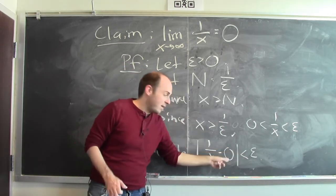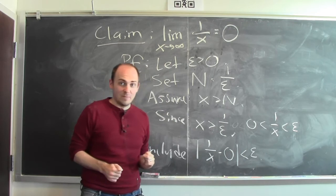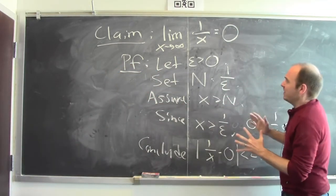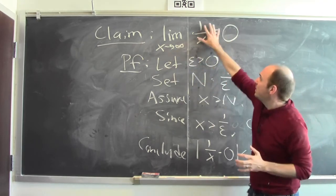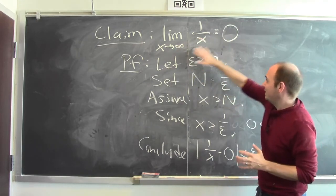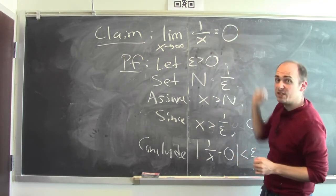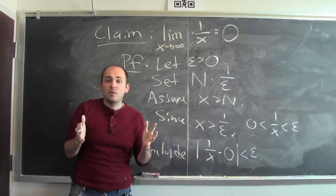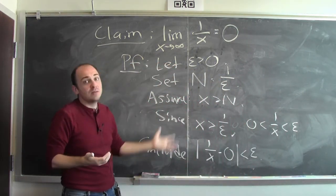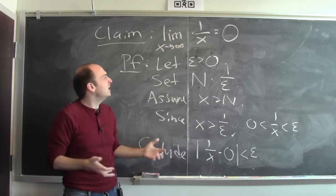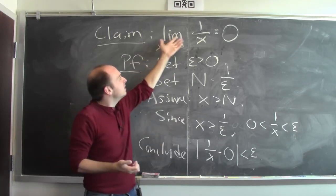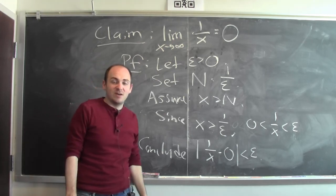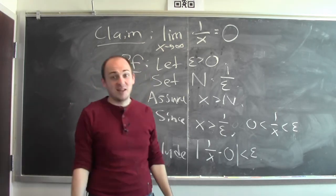So this is an argument that hopefully convinces you that the limit of 1 over x as x approaches infinity really is 0. At this point, you're challenged to try to produce other arguments similar to this. Can you convince me, for example, that the limit of 1 over x squared as x goes to infinity is equal to 0? I'll leave that for you. Good luck.